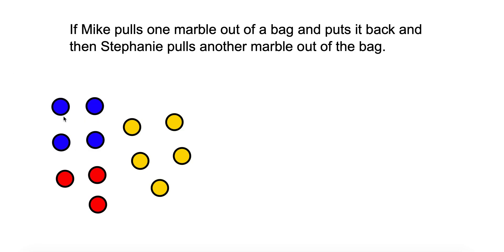Okay, so here we got some marbles. We got four blue, three red, and five yellow. So it says if Mike pulls one marble out of the bag and puts it back, then Stephanie pulls another marble out of the bag. Is that an independent or dependent?